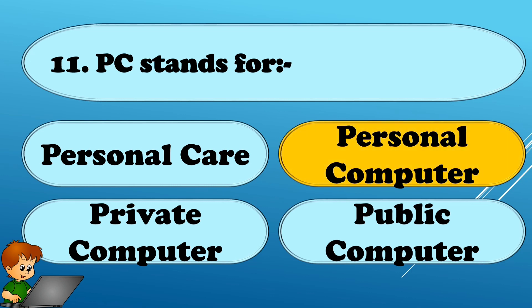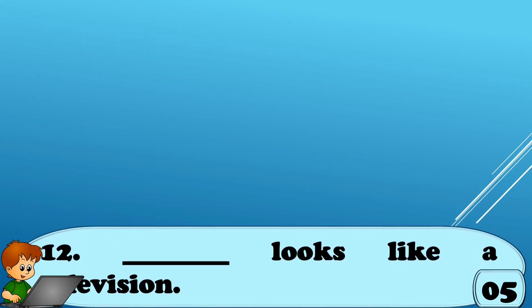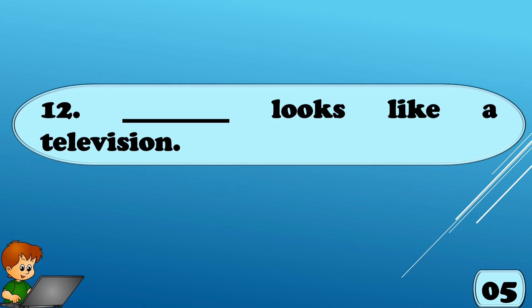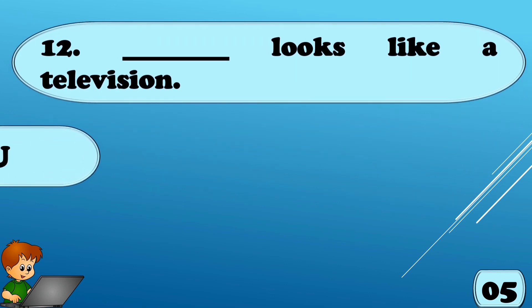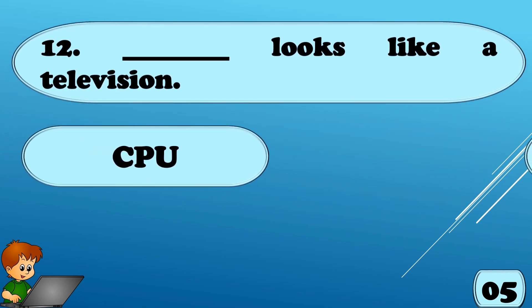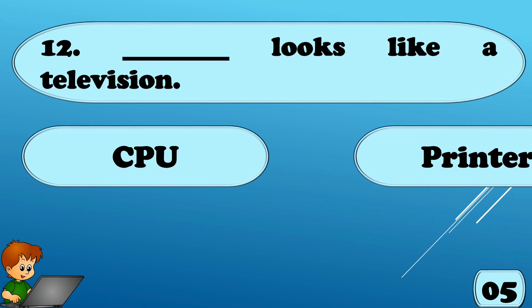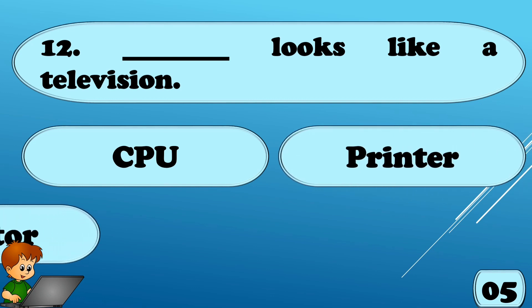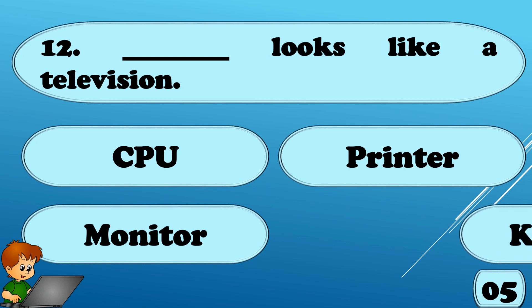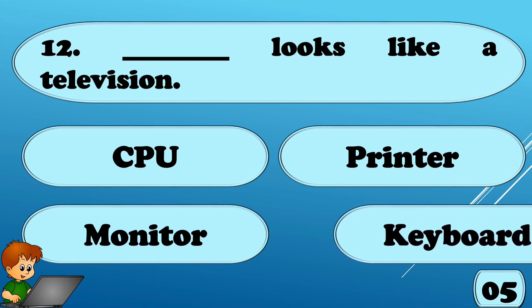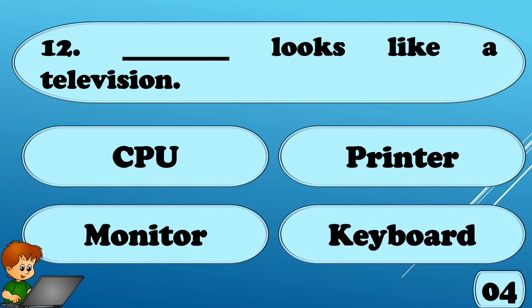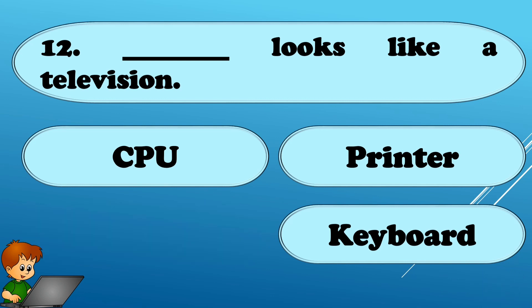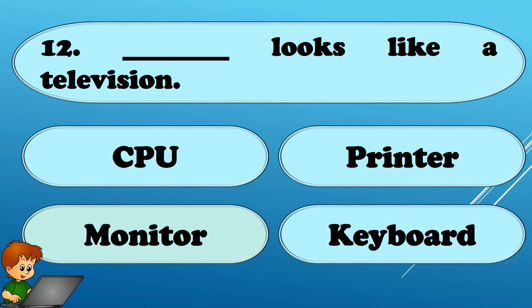What looks like a television? Options are A. CPU, B. Printer, C. Monitor, or Option D. Keyboard. The correct answer is Monitor.